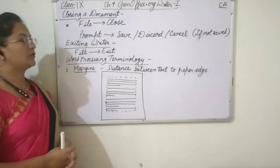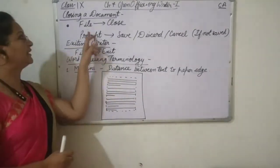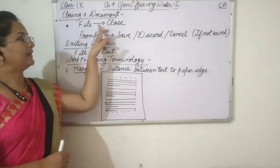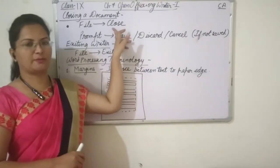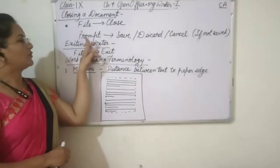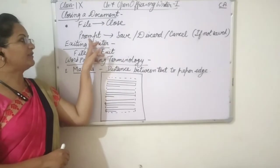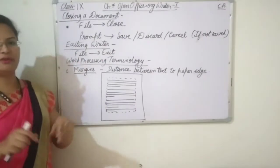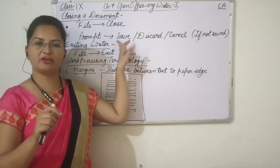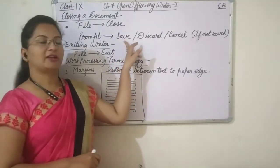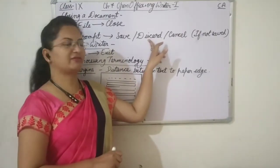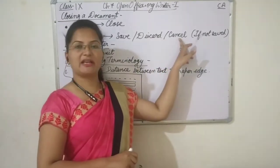Now, closing a document. If we have to close the document, we can click on Close in the File menu. This way the document will close, but the software application will not close. If we have not saved the document yet, a prompt will appear asking us whether we want to save the document before closing. We can click Save to save, Discard to discard the changes, or Cancel to abort.